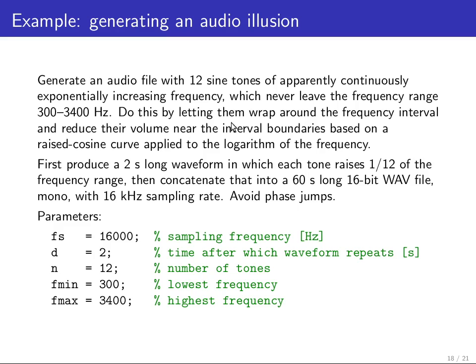And we do this by letting them wrap around the frequency interval, but such that it does not become obvious that when it has reached the top of the frequency interval, it just reappears at the bottom. We fade out the amplitude of each tone as it approaches the top of the frequency range, and we fade it in again when it comes from the bottom. And for that we use a raised cosine curve.